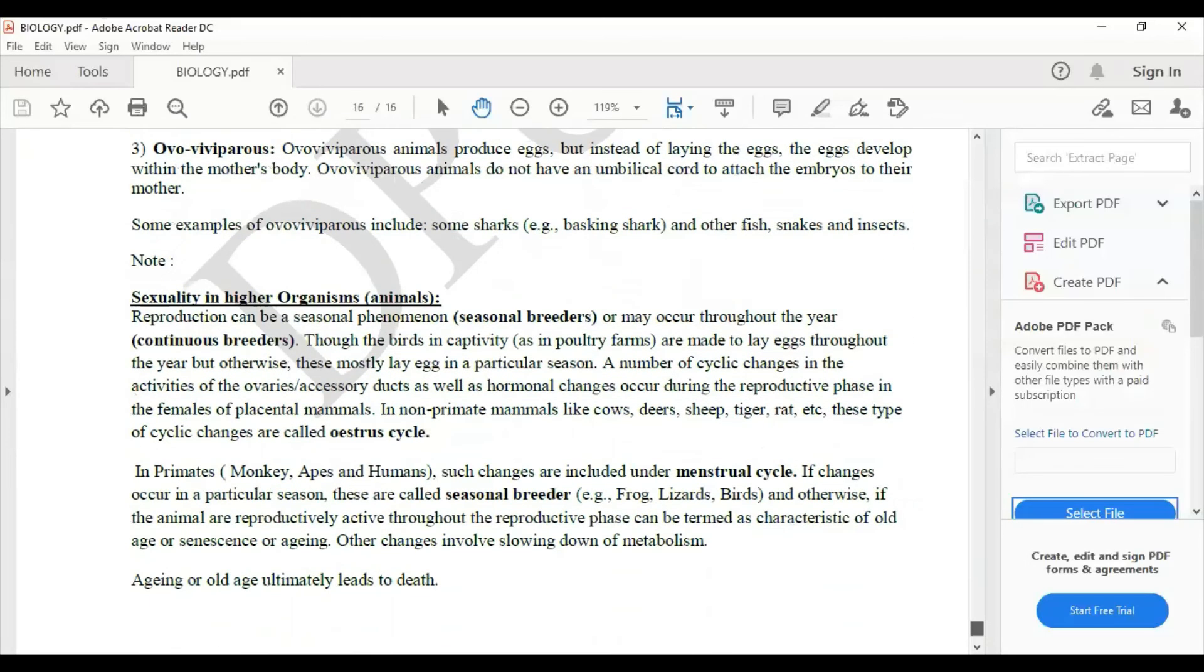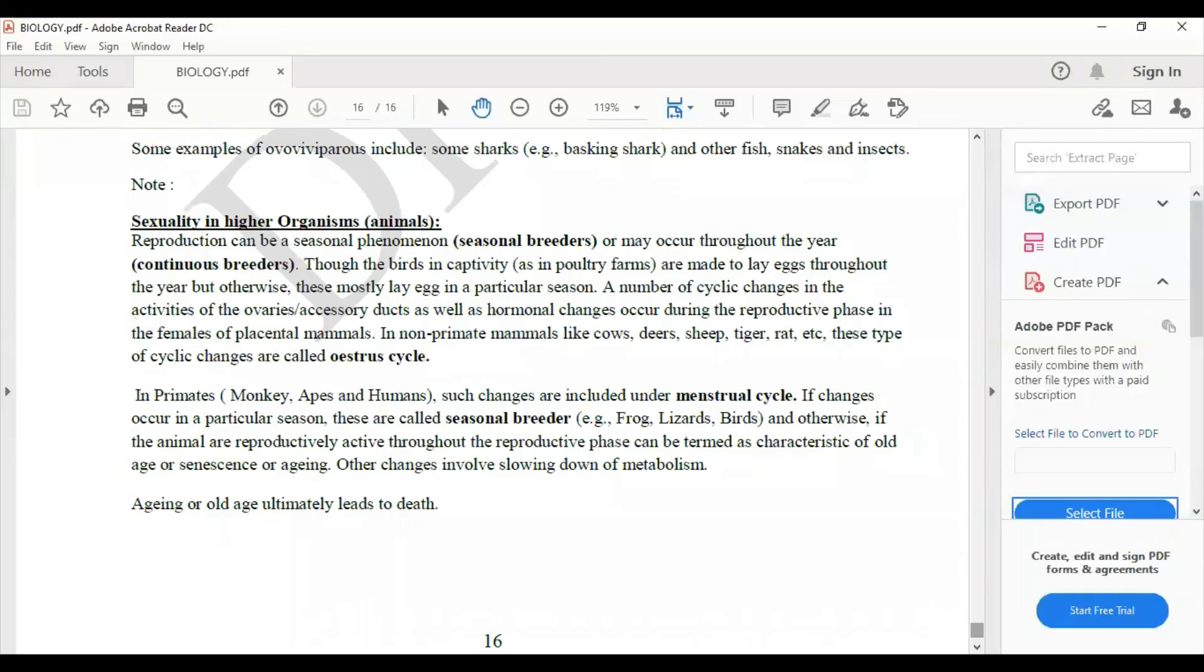Moving on to the next one, sexuality in higher organisms, that is animals. So here they have spoke about seasonal breeders and continuous breeders. There is a mentioning of estrous cycle and menstrual cycle too. Make sure you study these with examples.